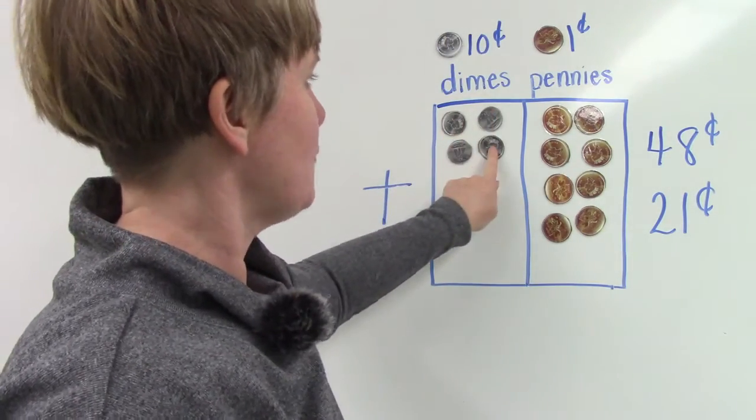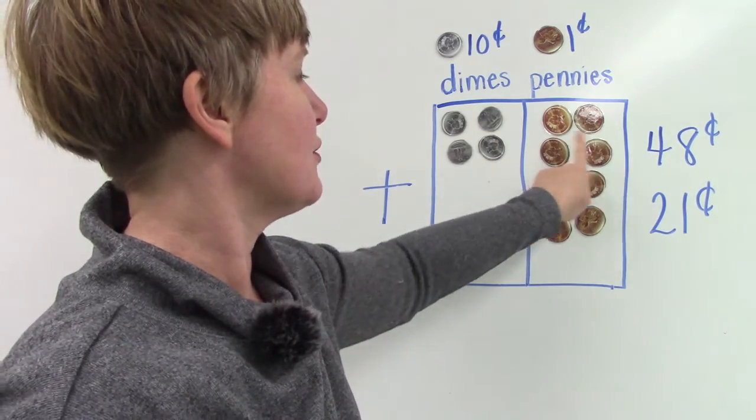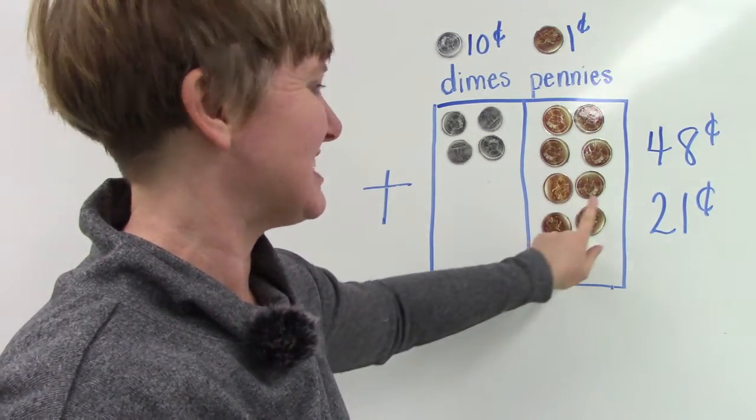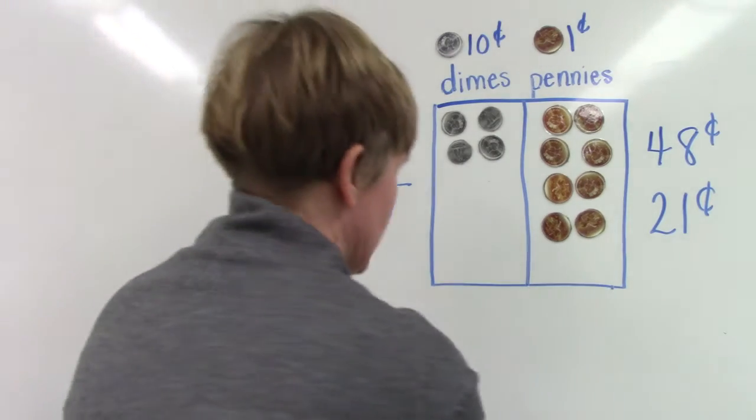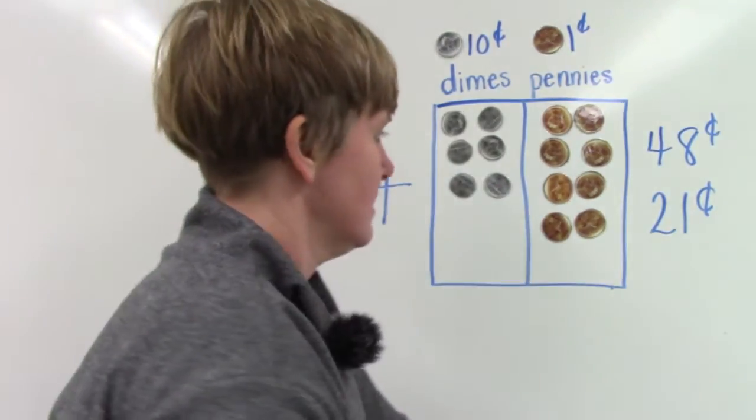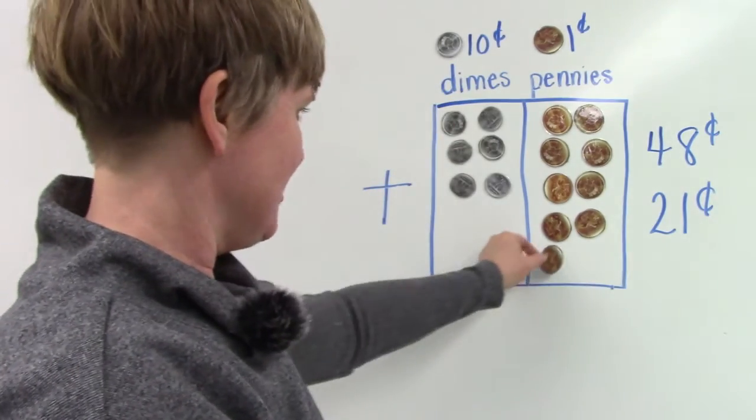10, 20, 30, 40, 41, 42, 43, 44, 45, 46, 47, and 48 cents. Now I'm going to show 21 - that's two more dimes and one more penny.